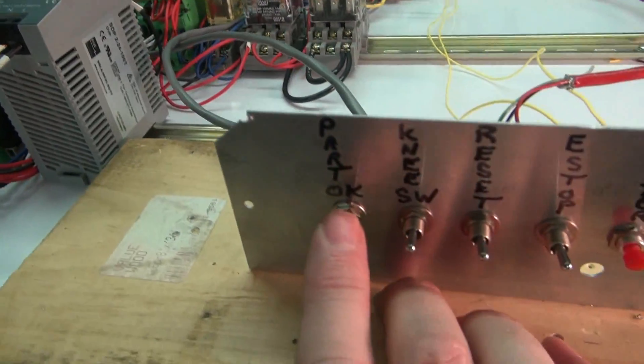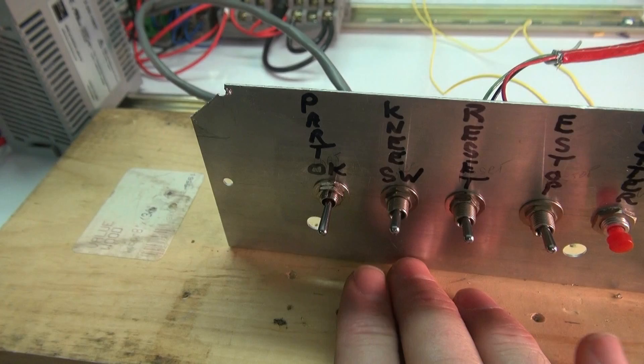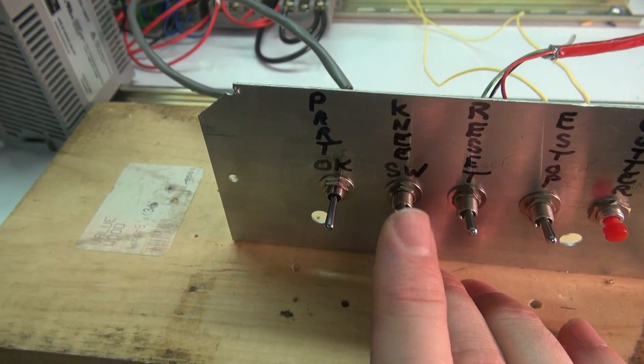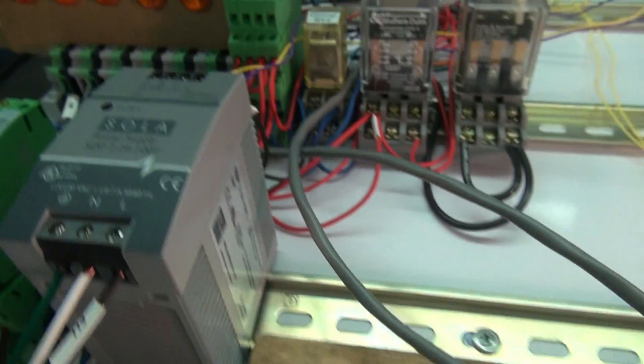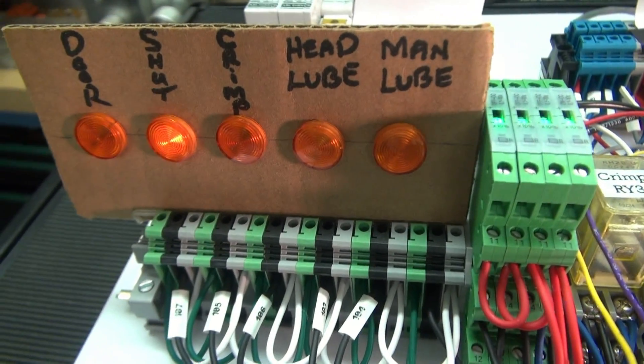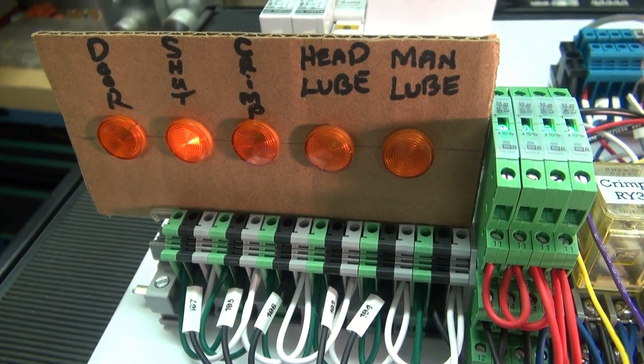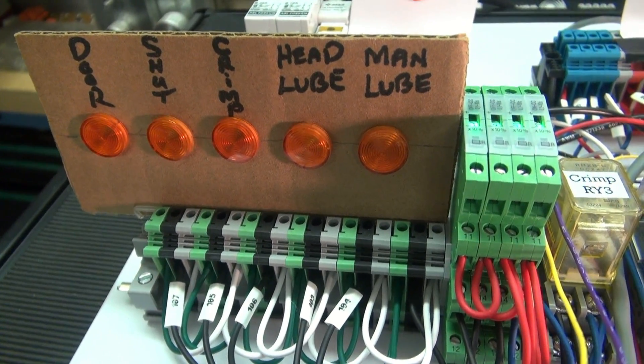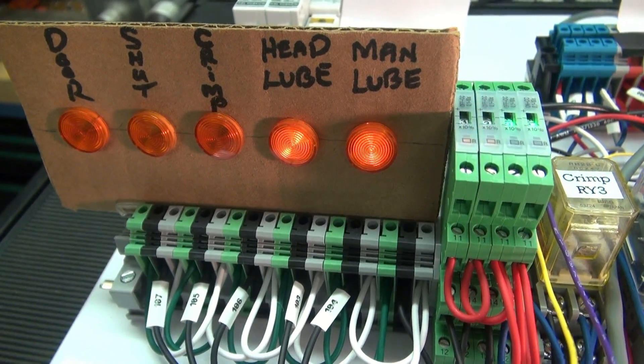Now let's say the part's not okay. And it's still not okay. And then you try to hit the knee switch to do a crimp. Nothing. Now part's okay. We did the crimp.